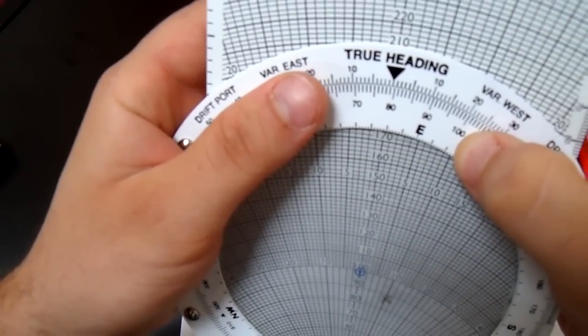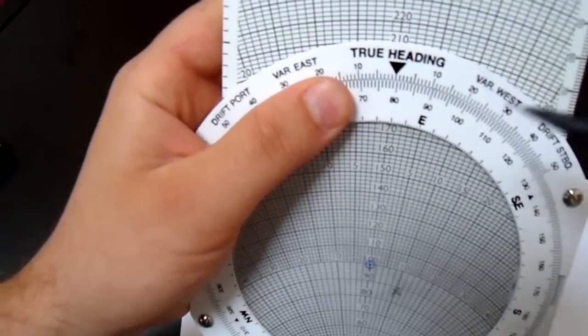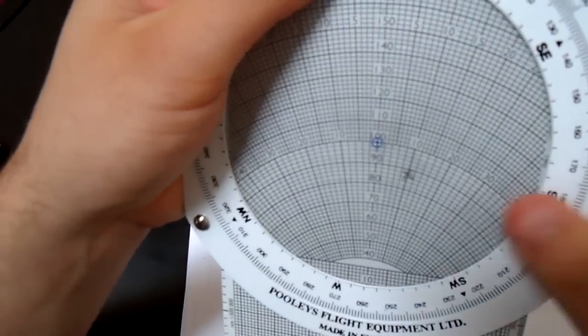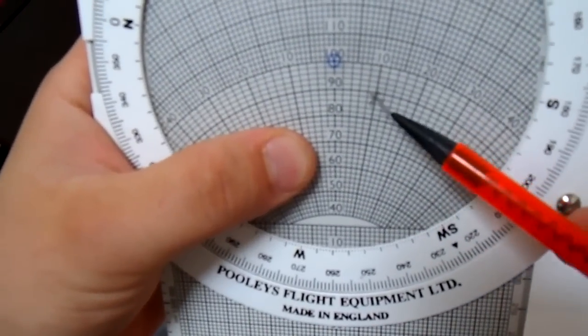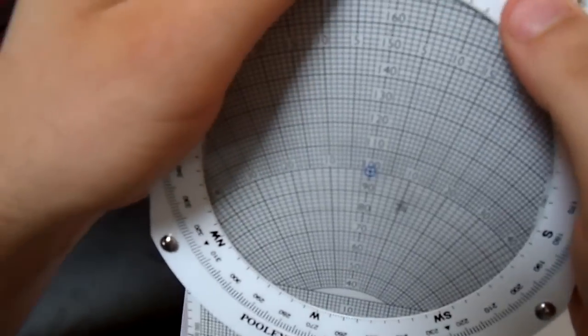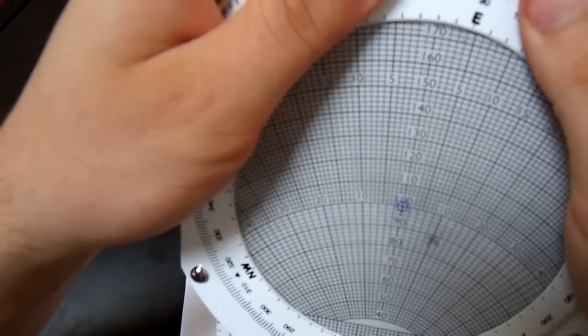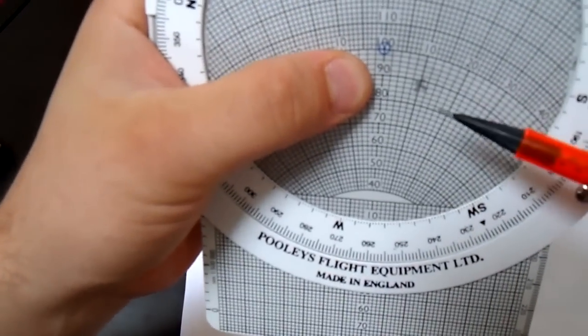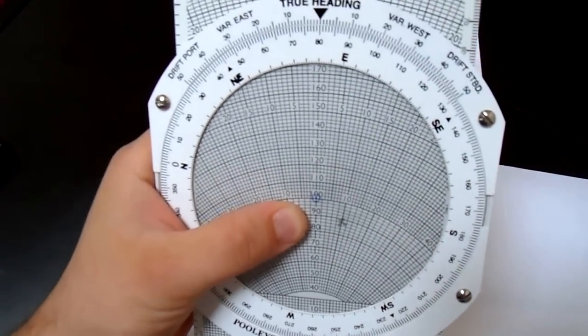So we can line up 79.5 degrees to the true heading. And now we're going to look back at the cross and see that it now says 10 degrees variation. So we're going to go back to 080, which is 10 degree variation, and it matches.